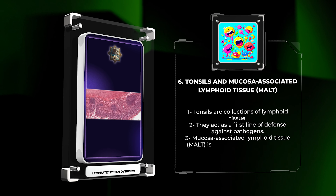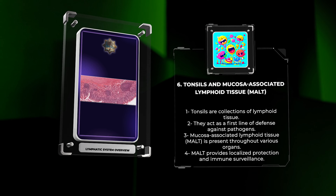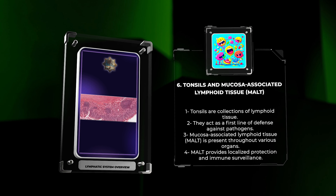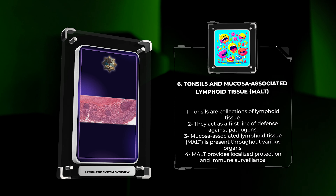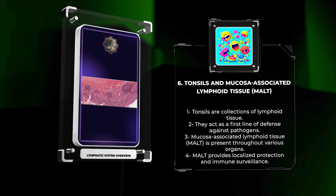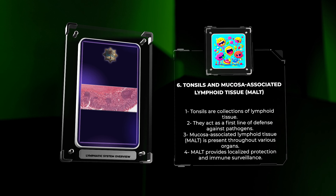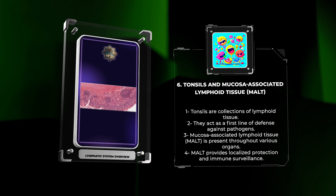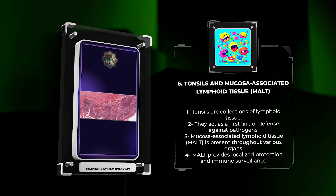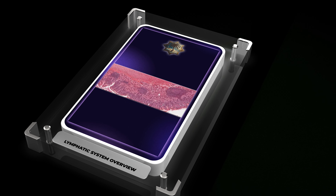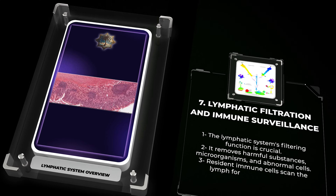Tonsils are collections of lymphoid tissue located at the back of the throat. These structures include the pharyngeal tonsil (adenoids), palatine tonsils, and lingual tonsils. They act as a first line of defense against inhaled or ingested pathogens by trapping and initiating an immune response against them. Mucosa-associated lymphoid tissue (MALT) refers to a diffuse network of lymphoid tissue present throughout the mucosa of various organs, such as the respiratory, digestive, and genitourinary tracts, providing localized protection and immune surveillance against pathogens invading these mucosal surfaces.